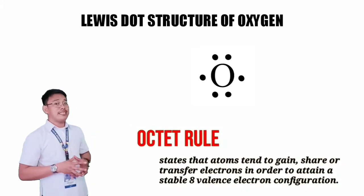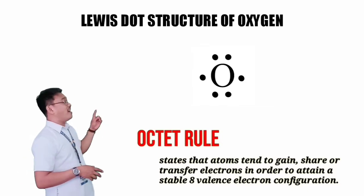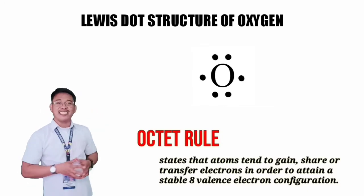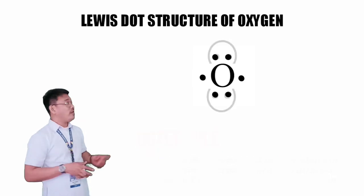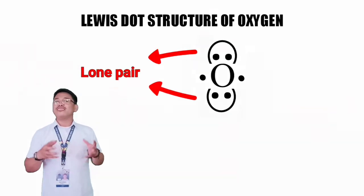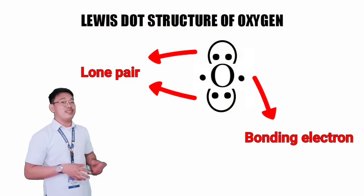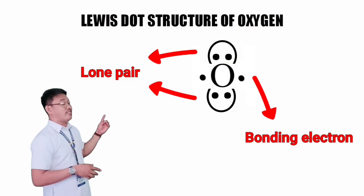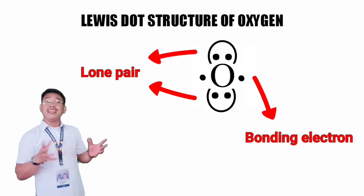Remember the Octet rule from our previous video? To make it easier to remember, each side must have two electrons. The electrons that already have a partner, we call the lone pair — they're already happy in their love life. And the single ones, we call the bonding electrons — they're the ones looking to bond and find a pair.